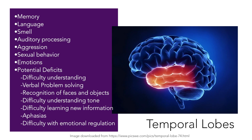A bit behind and below, inferior to the frontal lobe, is the temporal lobe. The temporal lobes are involved in a number of functions. They are involved in understanding of language, memory, smell, and auditory processing. It is broadly associated with aggressive behaviors, sexual behavior, and emotions. With an injury to this area, you can see a number of impairments including increased difficulty with verbal problem solving, learning new information, emotional regulation, language comprehension, and most famously difficulty with facial recognition. If you've ever heard the name Oliver Sacks, then you've probably heard of the book 'The Man Who Mistook His Wife for a Hat.' In this book, Dr. Sacks describes an injury to the inferior temporal gyri that causes difficulty with facial recognition. It's a great read if you've not read it.